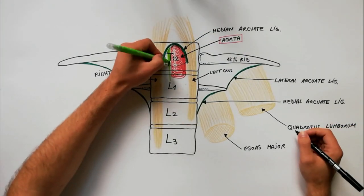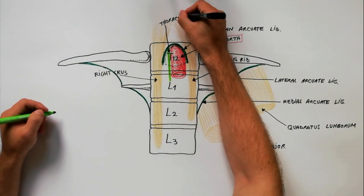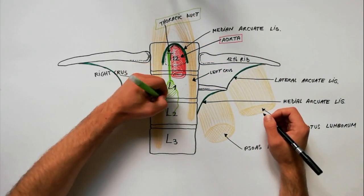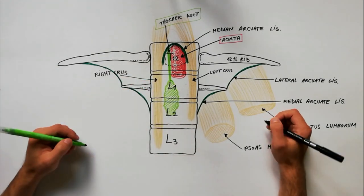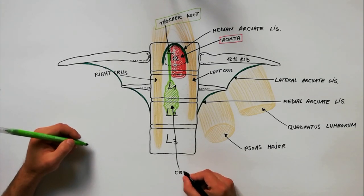Another structure passing through this hiatus is the thoracic duct. As you may know, the thoracic duct originates in the abdomen as a dilatation placed in front of the L1 and L2 vertebrae called the cisterna chyli.